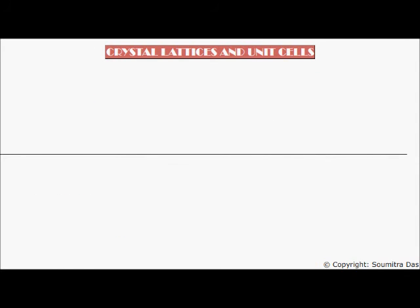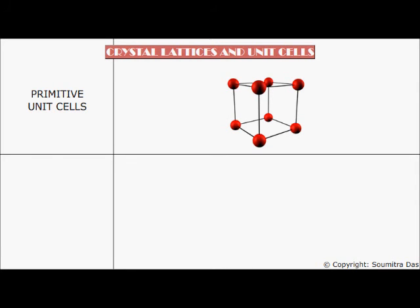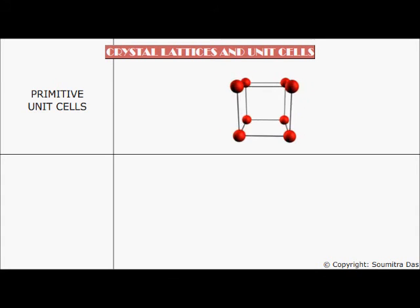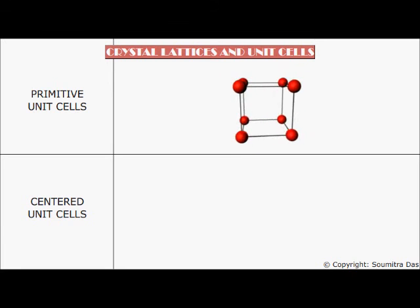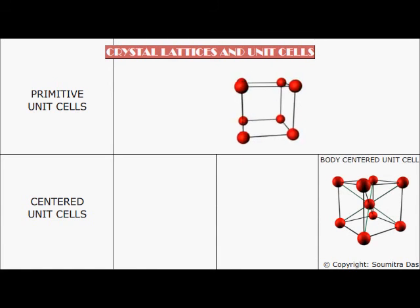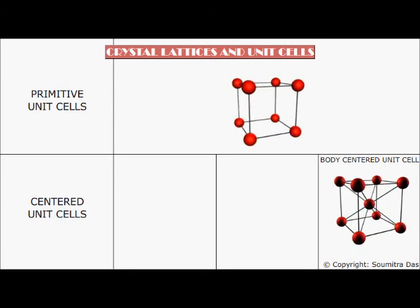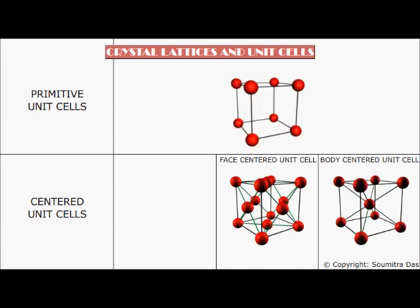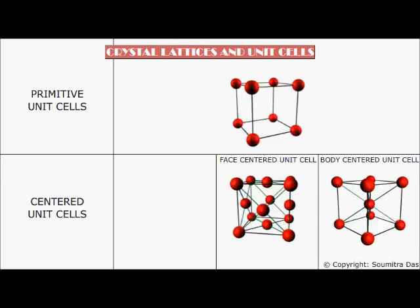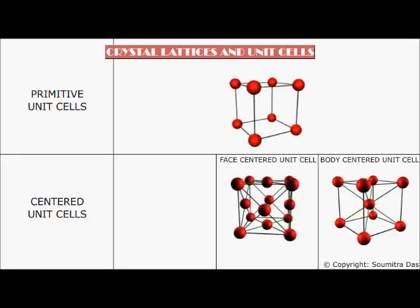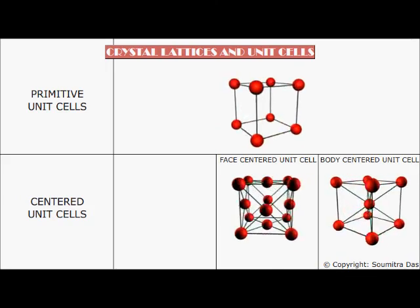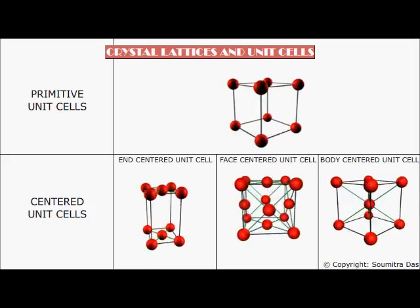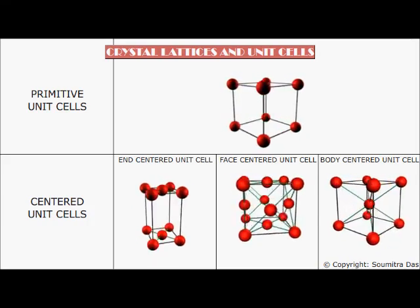Unit cells may be broadly divided under two heads. Number one: Primitive unit cells, which have constituent particles situated only at the corners of the unit cell. Number two: Centered unit cells, which contain constituent particles at positions other than corners, and may be subdivided into three types: (A) Body-centered unit cells, which have a constituent particle at the center of the unit cell in addition to the ones at the corners; (B) Face-centered unit cells, which have six constituent particles at the centers of the six faces in addition to the corners; and (C) End-centered unit cells, which have two constituent particles at the centers of two opposite faces in addition to the corners.